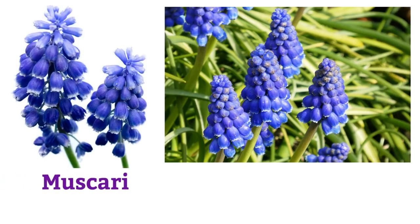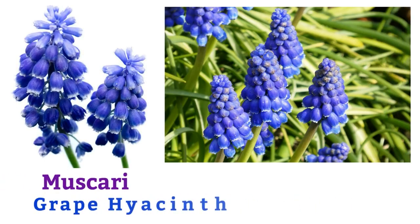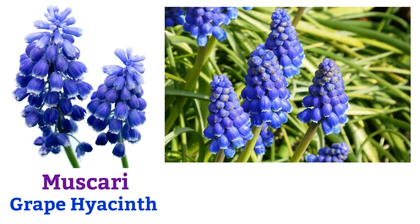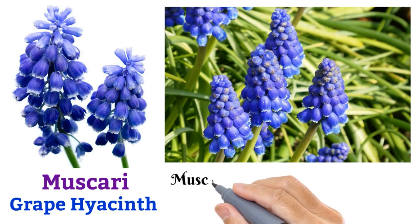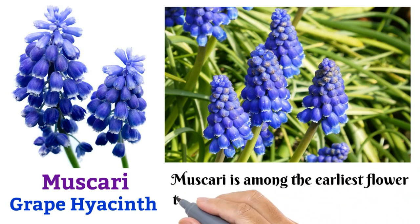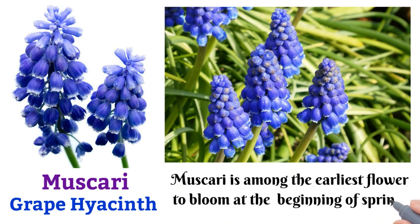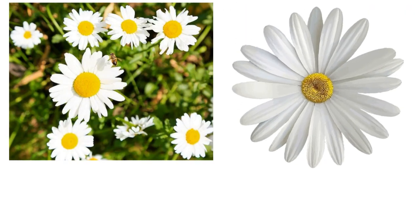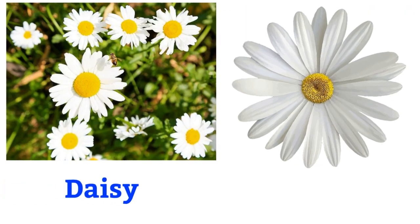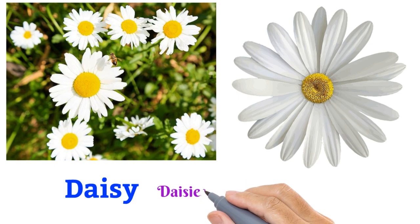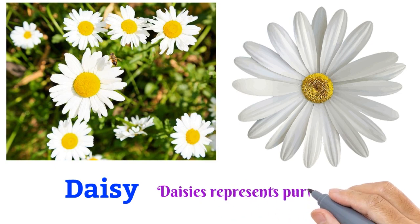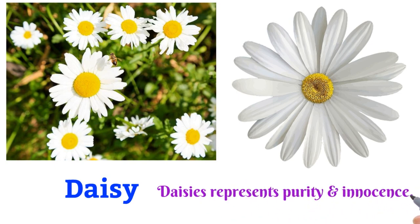Hyacinth: the hyacinth is used in the celebration of the Persian New Year. Muscari, or grape hyacinth: muscari is among the earliest flowers to bloom at the beginning of spring. Daisy: daisies represent purity and innocence.